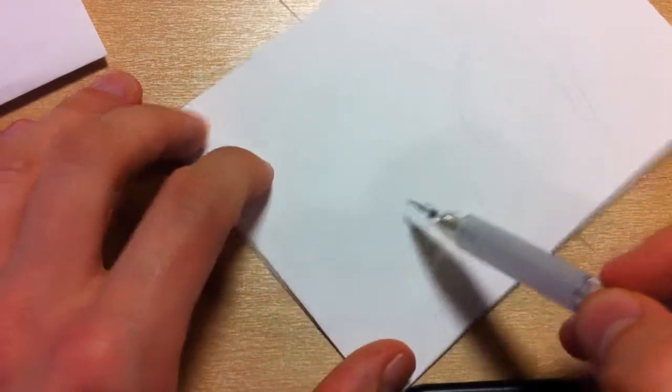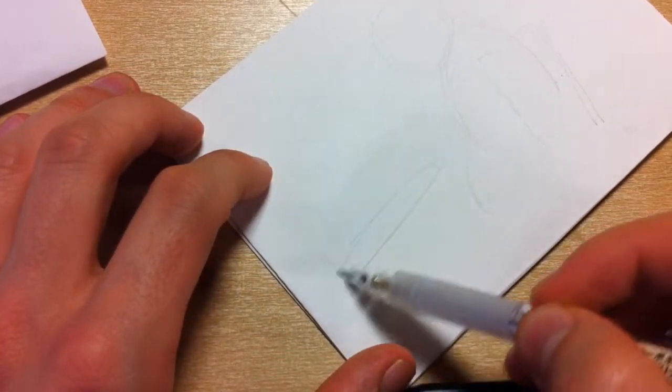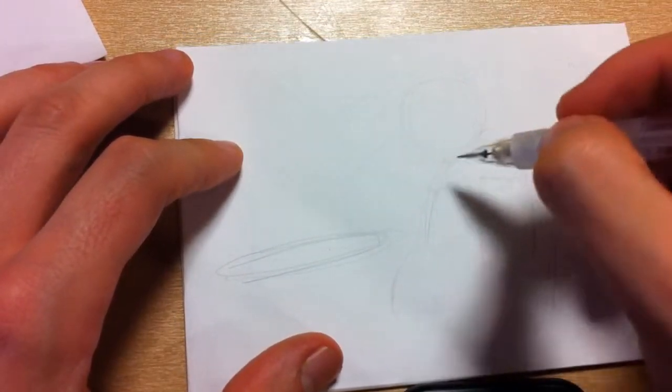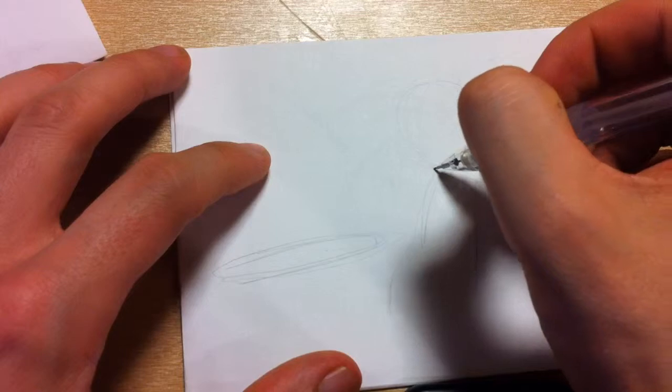The table is going to go here, so we need an oval shape around here.